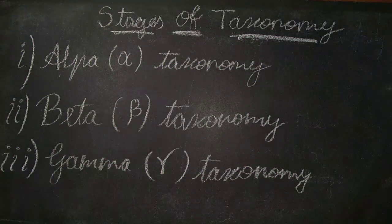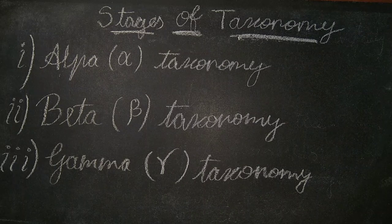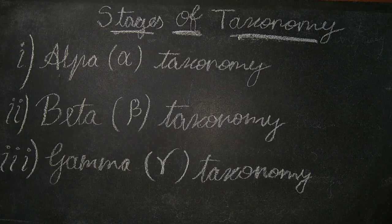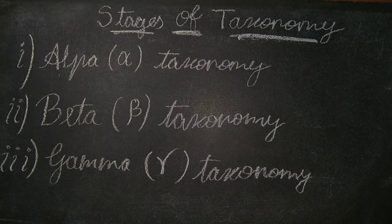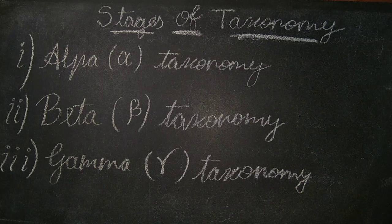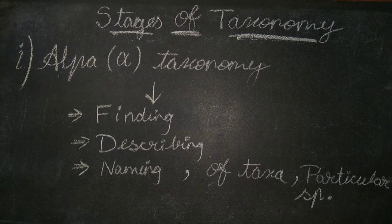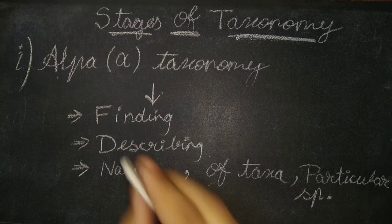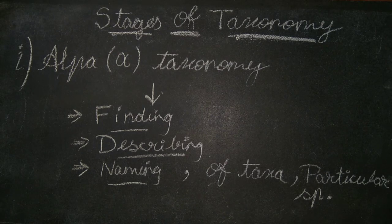Now we will move on to the next topic, that is the stages of taxonomy. There are three stages: first is alpha taxonomy, second is beta taxonomy, and third is gamma taxonomy. We will go into the details of all these three stages. Alpha taxonomy is primarily used today for finding, describing, and naming of the taxa or particular species.